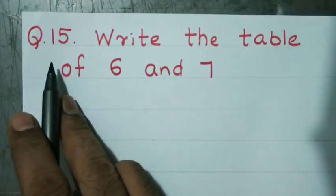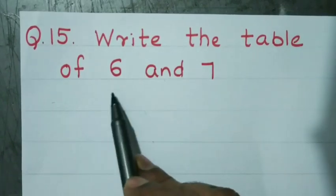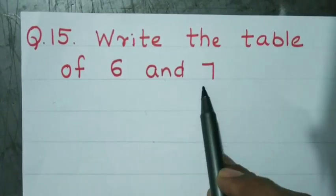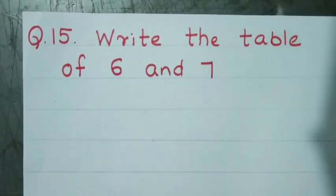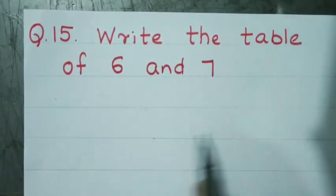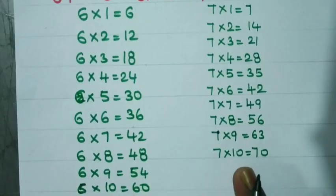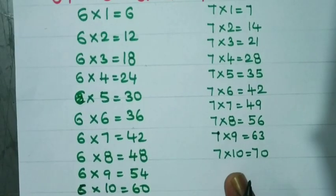Question number 15: Write the table of 6 and 7. You have to write the full table — the 6 times table and the 7 times table.